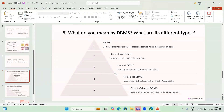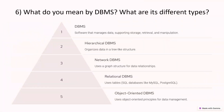Next question: what do you mean by DBMS and what are its different types? DBMS is the software that manages data — it supports storage, retrieval, and manipulation. There are four types: hierarchical DBMS, network DBMS, relational DBMS, and object-oriented DBMS. Hierarchical DBMS has a tree-like structure; network DBMS has a graph structure; relational DBMS uses a table structure; and object-oriented DBMS follows object-oriented principles.